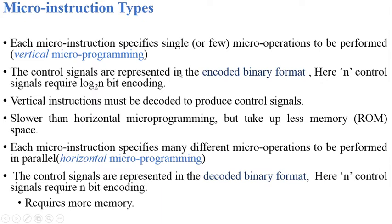For n control signals, we require only log₂(n) bits for representing the control signals. That means for representing n different control signals, we require only log₂(n) number of bits. This is the property of vertical micro programming — the control signals are represented in an encoded format.